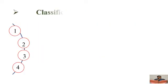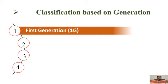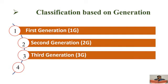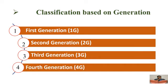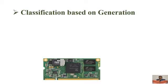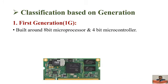Based on generation, embedded systems are classified into four types: first generation, second generation, third generation, and fourth generation embedded systems. Now let's see in detail about the classification based on generation, starting with the first generation.